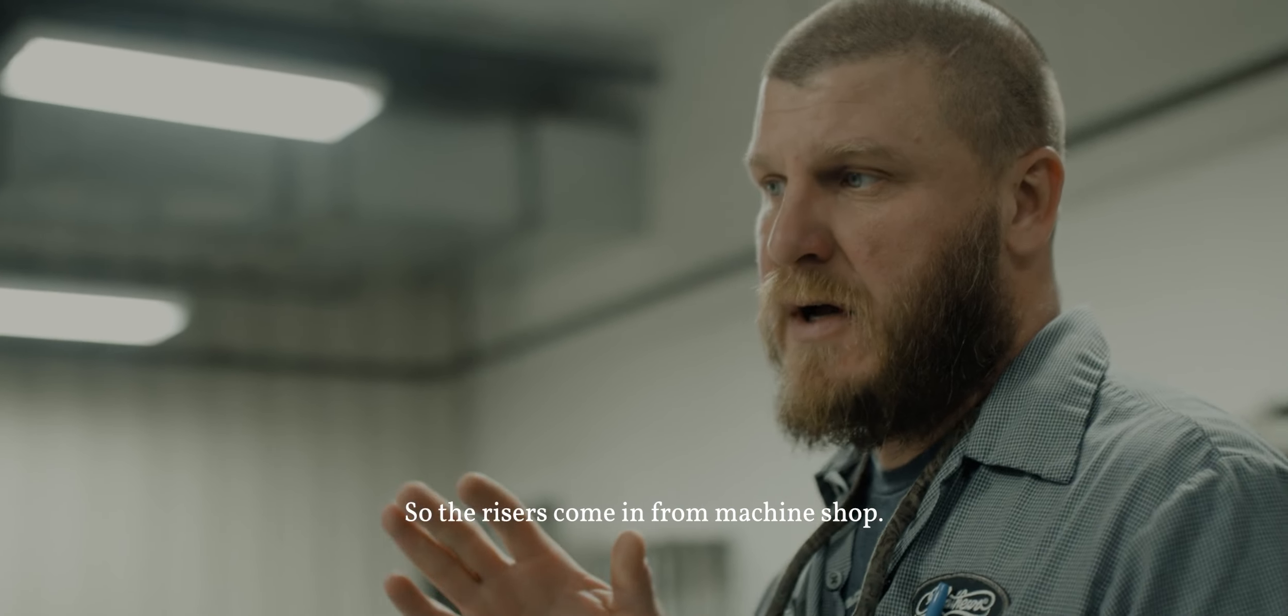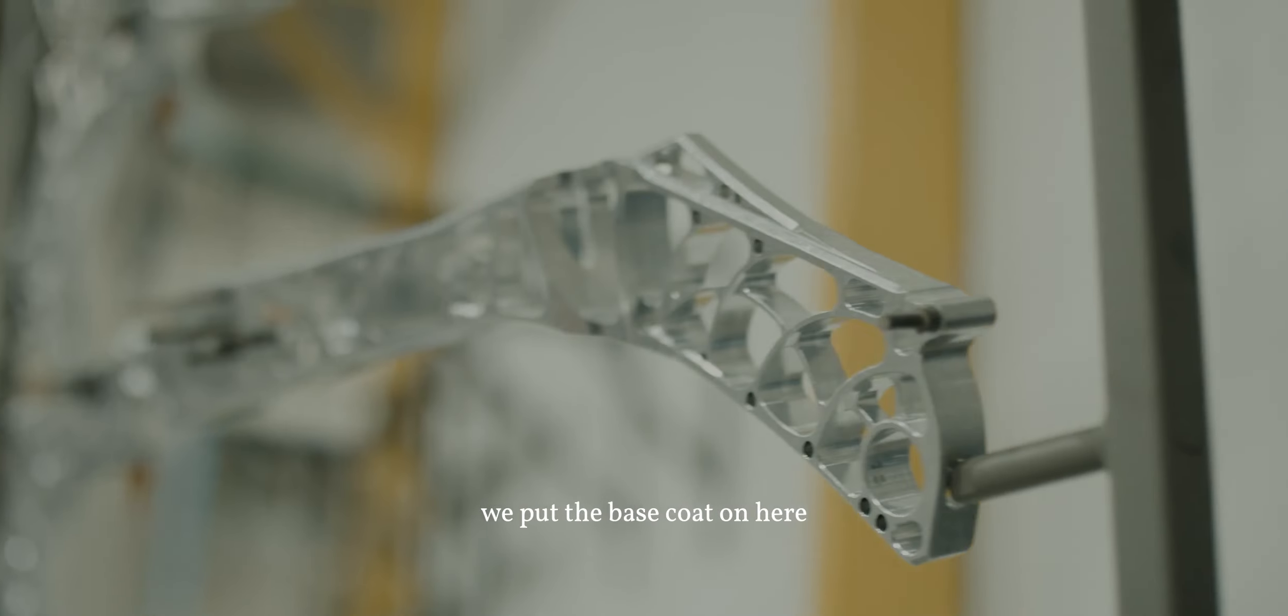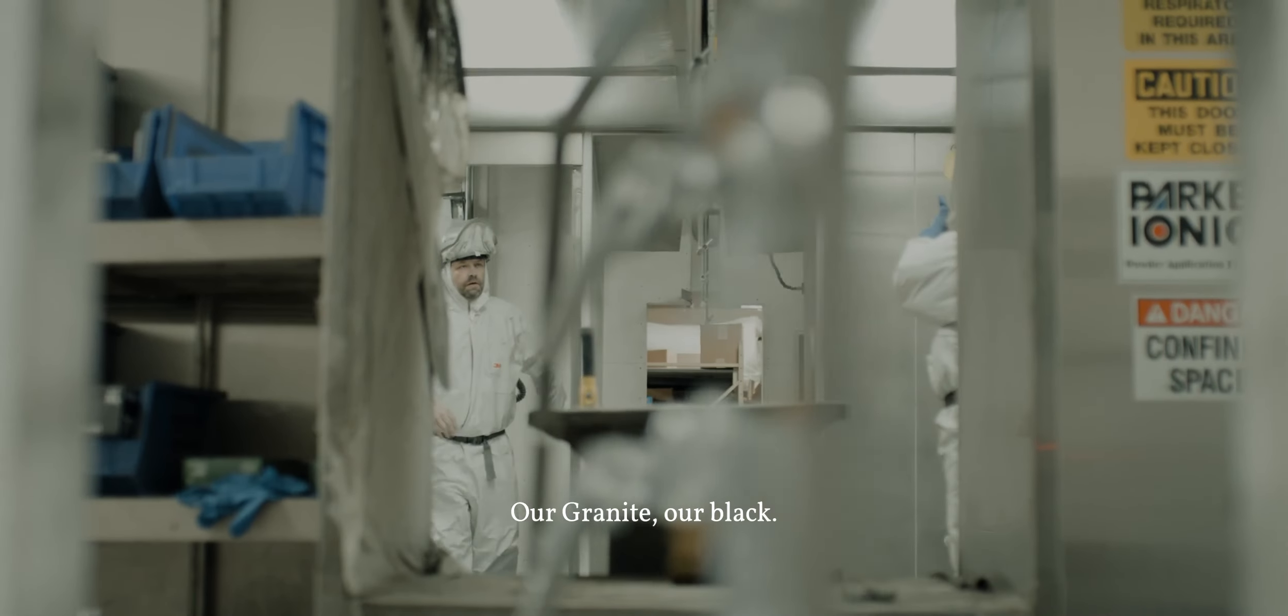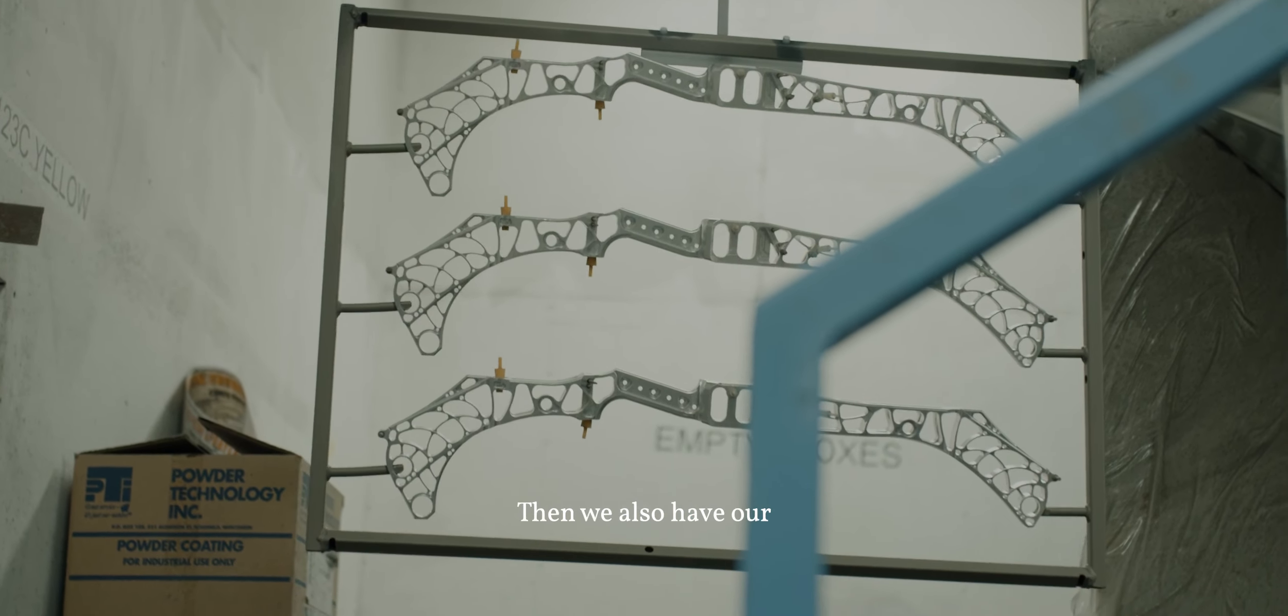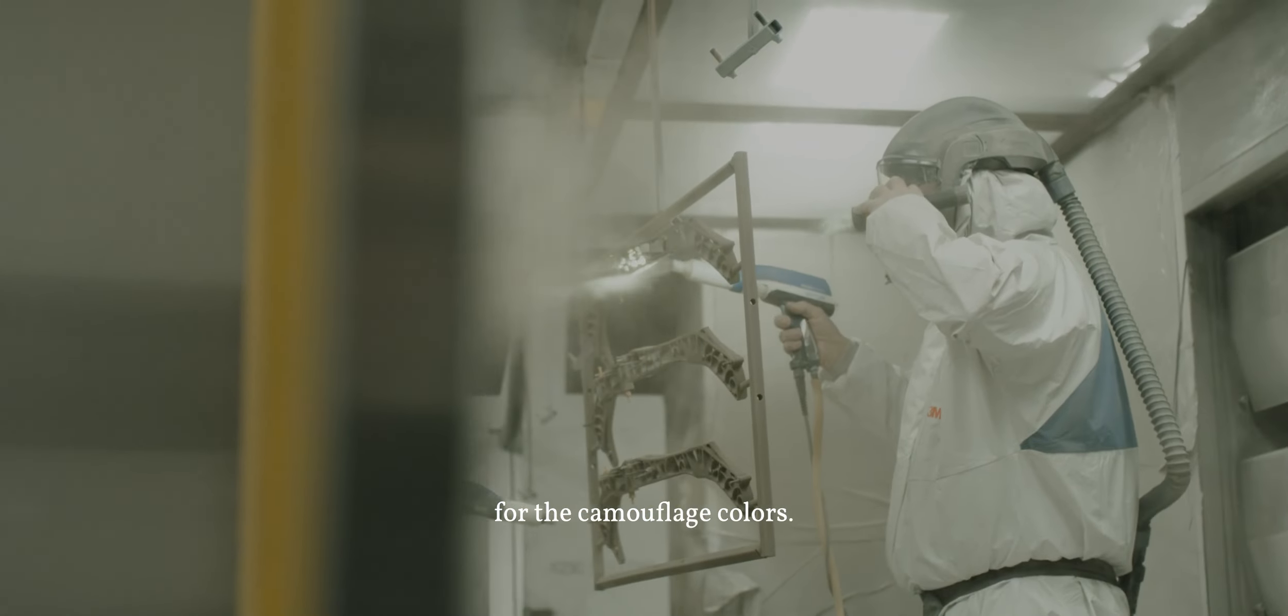So the risers come in from a machine shop. We load them up and then we put the base coat on here. Risers could have many different base coats: our green ambush, our granite, our black, and we also have our base coats for our camouflage too. We have four different base coats for the camouflage colors.